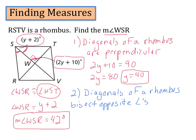So first we used the perpendicular diagonals property to find the 90-degree angle and solve for Y. Then we used Y to find our angle, knowing that the two angles formed by the diagonal were congruent.